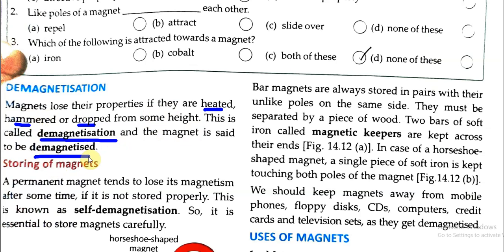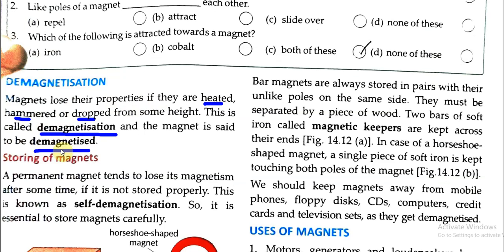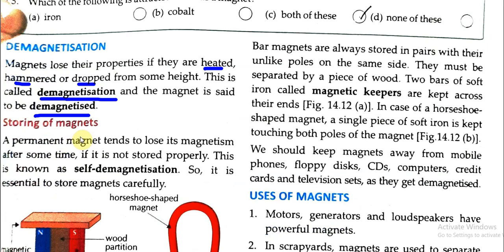A magnet whose magnetism has been lost is called a demagnetized magnet. There are three ways demagnetization can occur. Also, a permanent magnet tends to lose its magnetism after some time if it is not stored properly. This is known as self-demagnetization — the magnet gradually loses its magnetic property on its own.